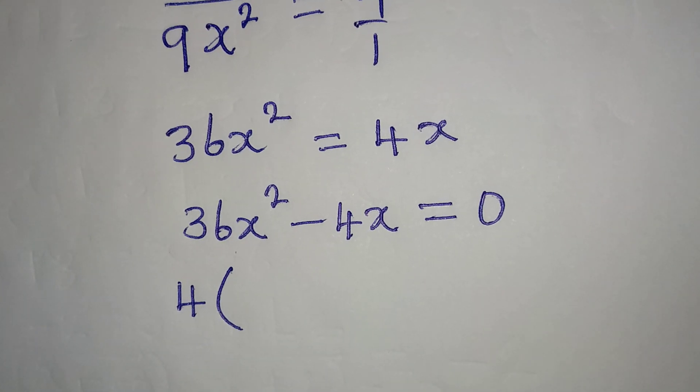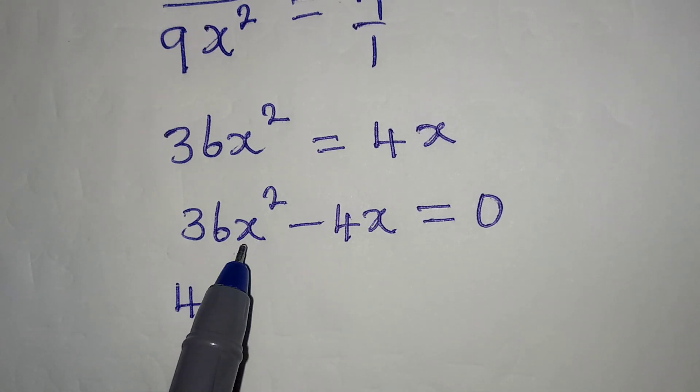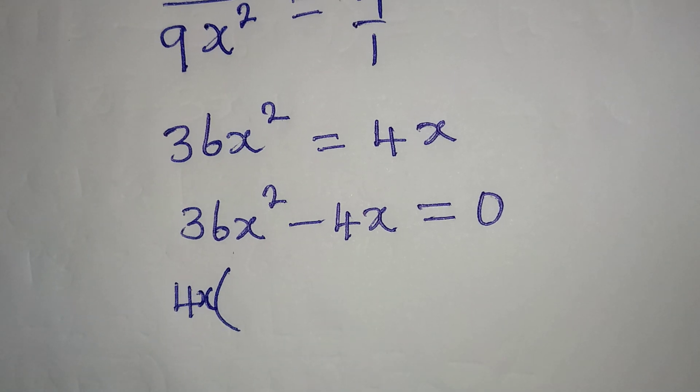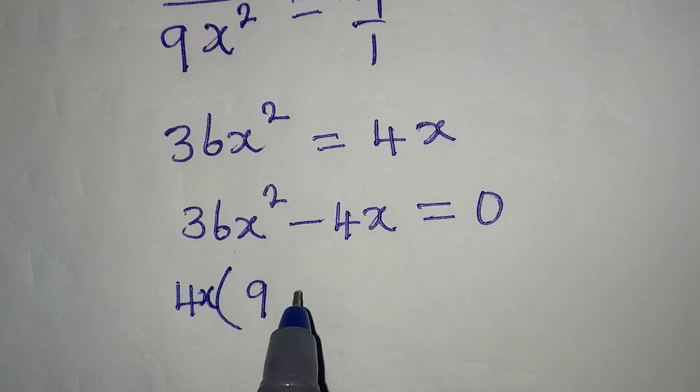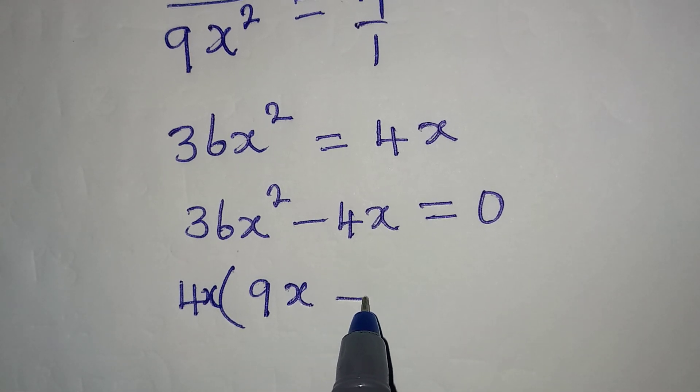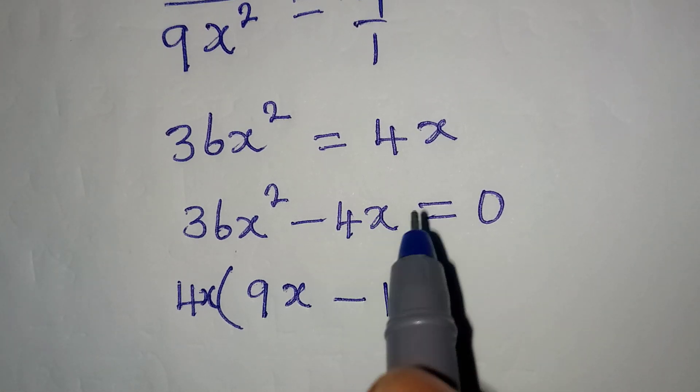4 is a common factor and x is also a common factor. So have 4x on the outside, and then 4 into 36 will give 9, then x into x² we have 1x, then minus here we have 1 because the whole of this has been divided by this. So 4x(9x - 1) = 0.